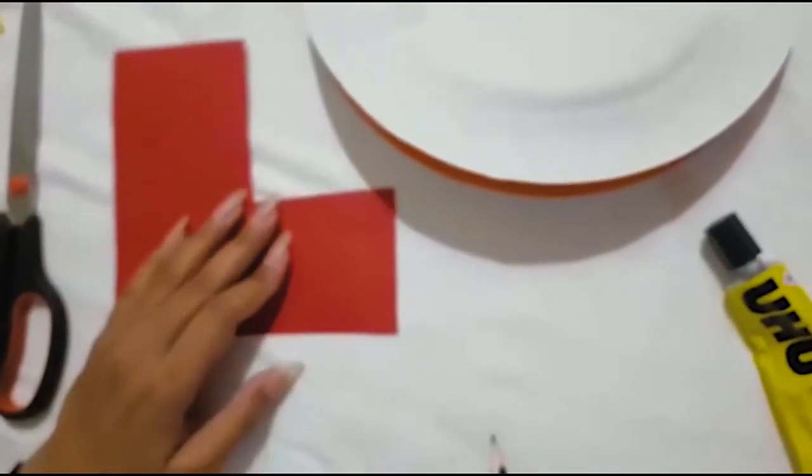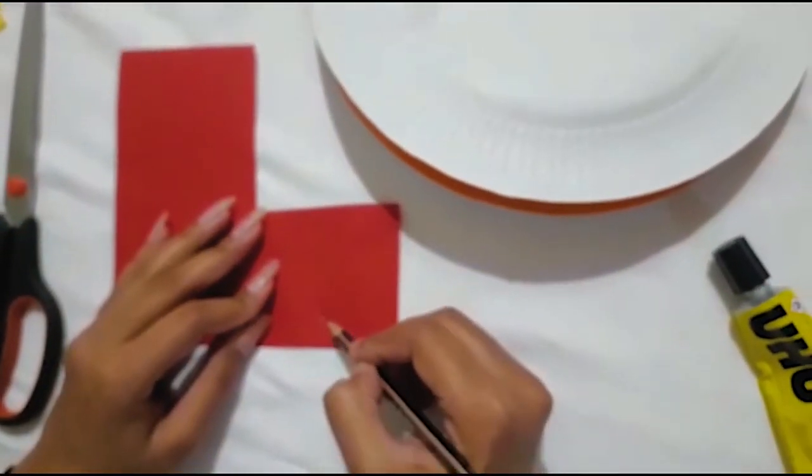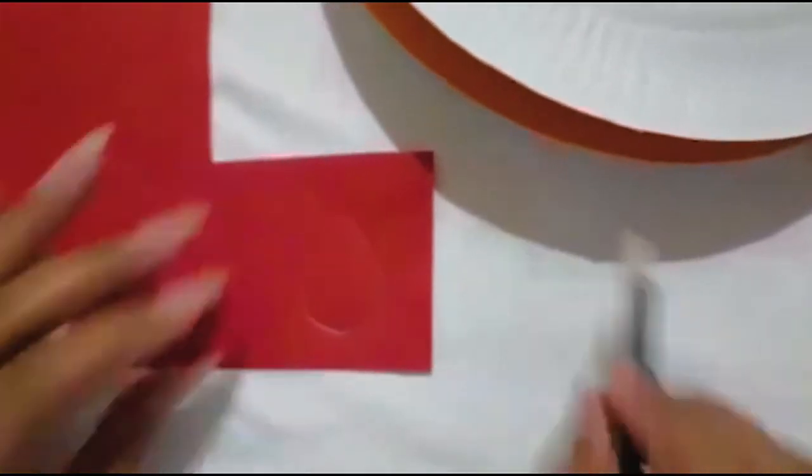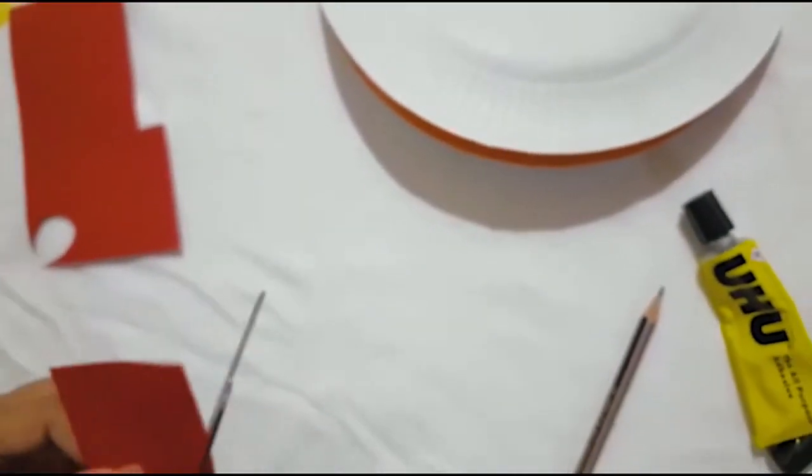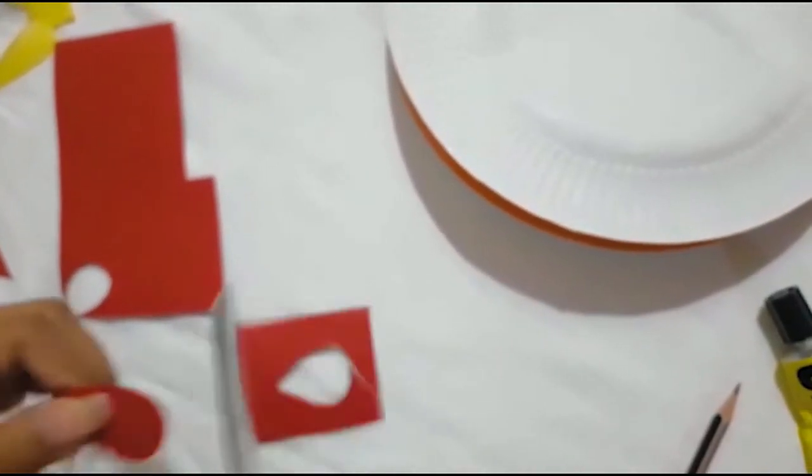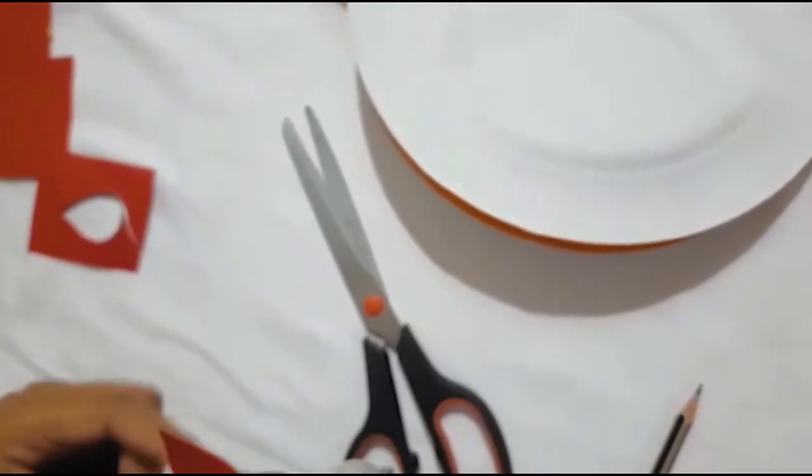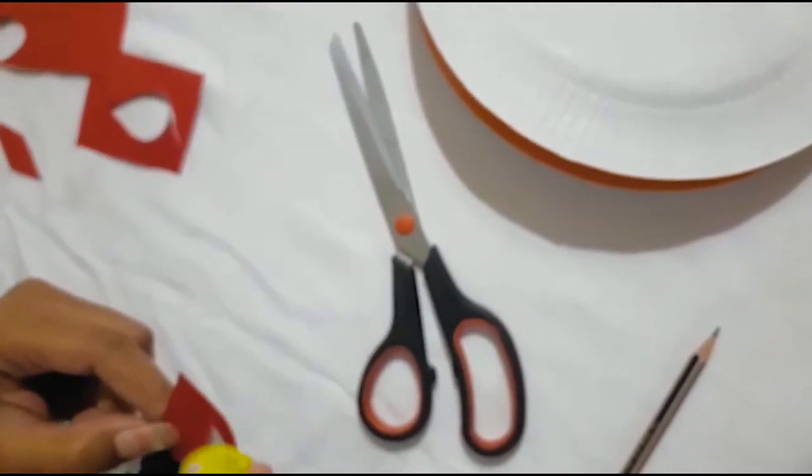Take a piece of red chart paper again to make a wattle in a drop shape. Now carefully cut it out, apply some glue, and paste it under the beak of the hen.